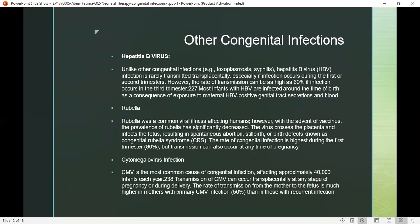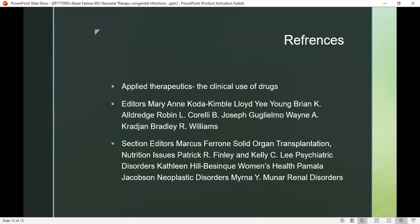Most infants with hepatitis B virus are infected around the time of birth as a consequence of exposure to maternal hepatitis B genital tract secretions and blood. Rubella affects humans; however, vaccines have largely prevented rubella, though the virus can also cross the placenta. Cytomegalovirus is a common virus in congenital infections, affecting approximately 40,000 infections, and transmission can occur at any stage through the placenta.